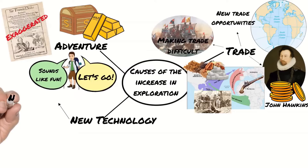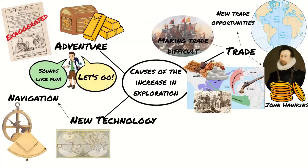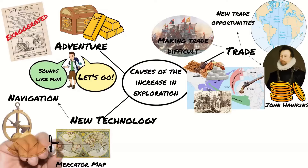None of this would be possible without the development of new technology. Navigation was becoming easier with the invention of the astrolabe and quadrants, and added to this was the development of better and then standardised maps. For example, the Mercator map, created in 1569, was the first to really standardise north at the top and south at the bottom. This made maps much easier to read and by combining them with the navigational tools it was now becoming quicker and safer to travel the vast Atlantic Ocean.